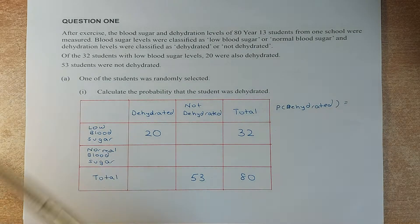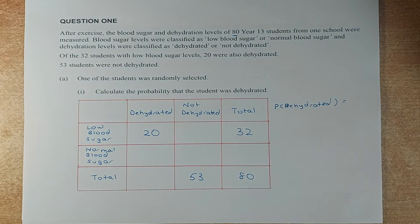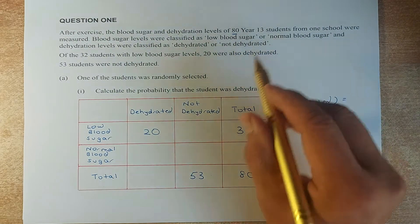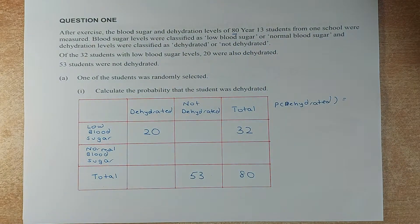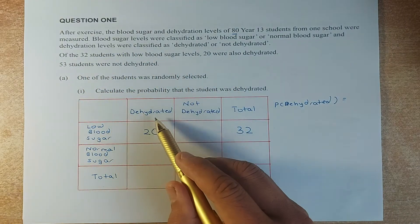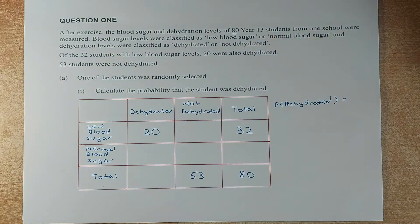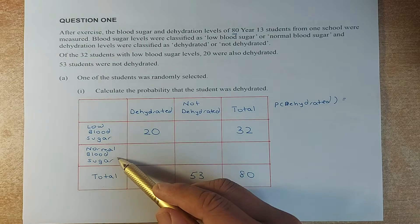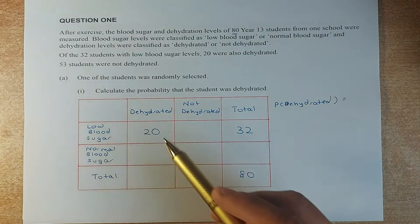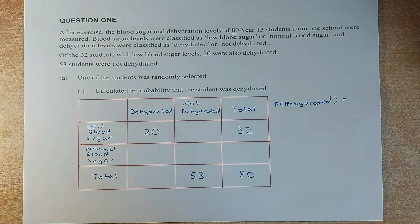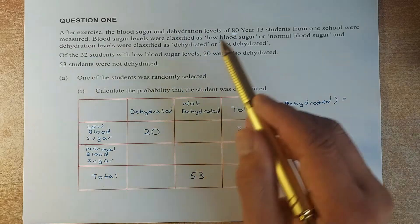Let's read the question. After the exercise, the blood sugar and dehydration levels of 80 year 13 students from one high school were measured. Blood sugars were classified as either low blood or normal blood, and the dehydration levels were classified as dehydrated or not dehydrated. We have a table with low blood sugar and normal blood sugar on the rows, and dehydrated and not dehydrated on the columns.